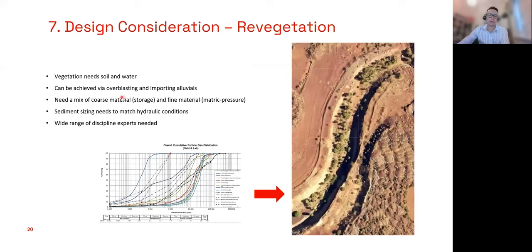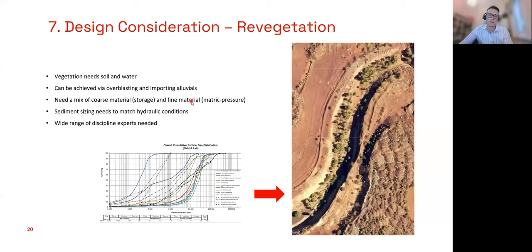Vegetation needs both soil and water to thrive. You can achieve this by a mix of over-blasting of material and importing alluvial material. You need coarse material for water storage, but also some fine material so that tree roots have to work to pull the water out rather than draining the supply quickly. Sediment sizing also needs to match hydraulic conditions — there's no point having fine material in a high-energy environment, as it'll be washed downstream. Likewise, if you've got really coarse material, the creek becomes sediment-starved and will try to erode away the natural creek system.